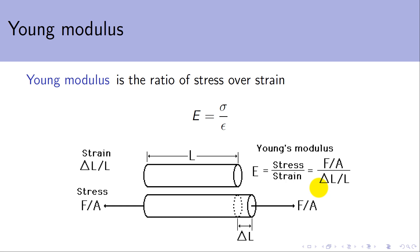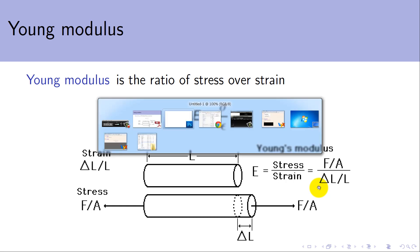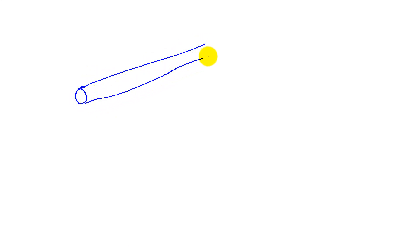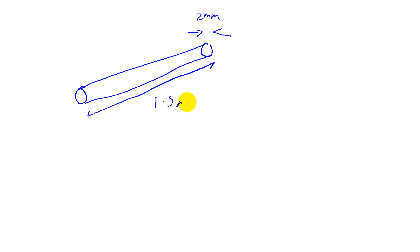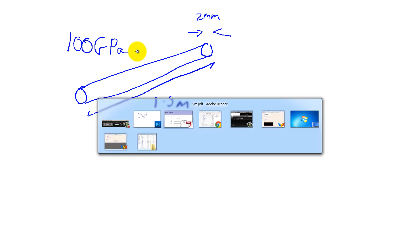Let's have a look at a quick calculation to show how this all fits together. Say we've got some cylindrical sample of material — a wire, for example. The diameter of this wire is 2mm, the length of the wire is 1.5 meters, and being a metal wire, a typical value of Young's Modulus for a metal might be somewhere in the region of 100 gigapascals.